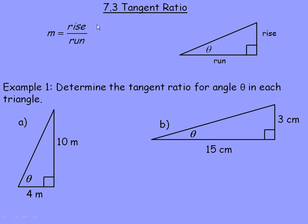In this lesson we will take a look at the tangent ratio. Reviewing back to a topic from the grade 9 academic course: if you have a right angle triangle with the sides labeled the rise and the run, the slope is the ratio of the length of the rise side to the run. So slope is rise over run.